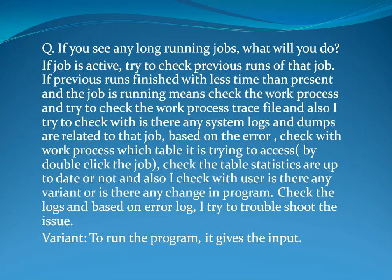If any long-running jobs are found and the job is active, I check the previous runs of that job. If previous runs finished in less time than the current run, I check the work process and its trace file, look for related system logs and dumps, check which table the work process is trying to access, verify that table statistics are up to date, and also check with the user if there is any variant change or program change. Based on the error log, I troubleshoot the issue.